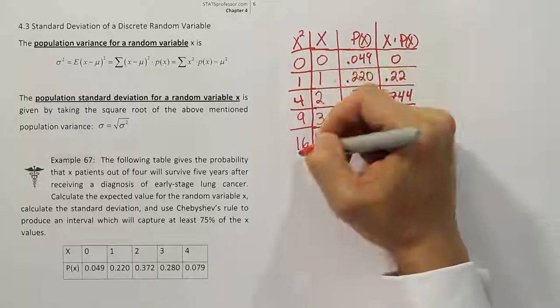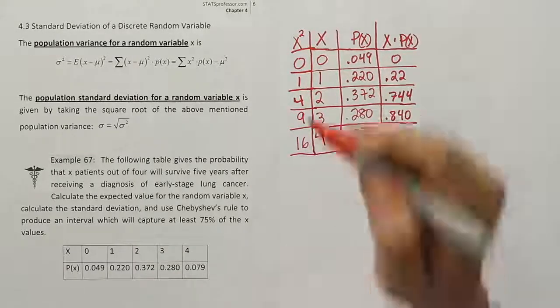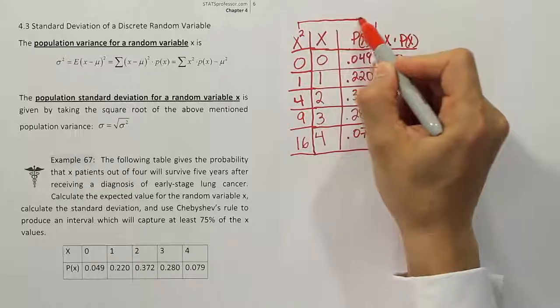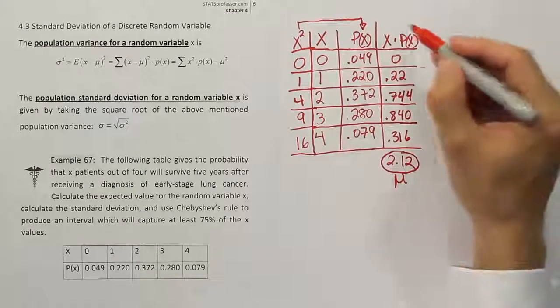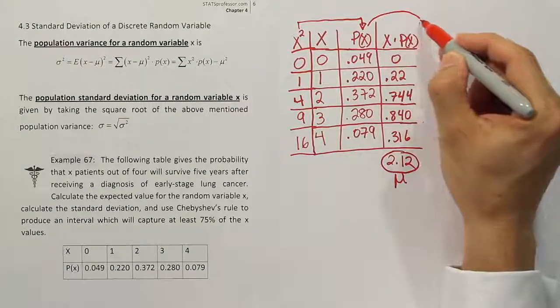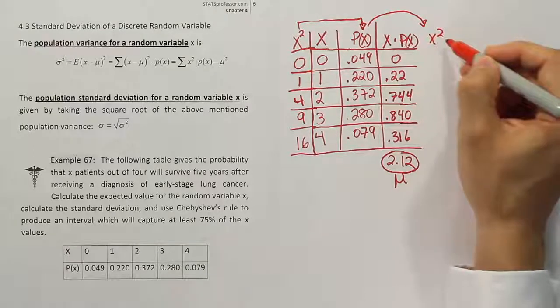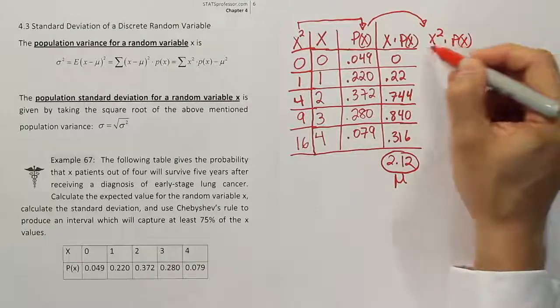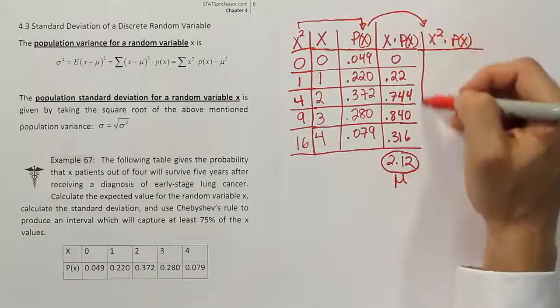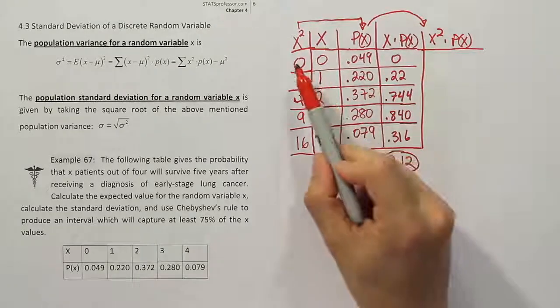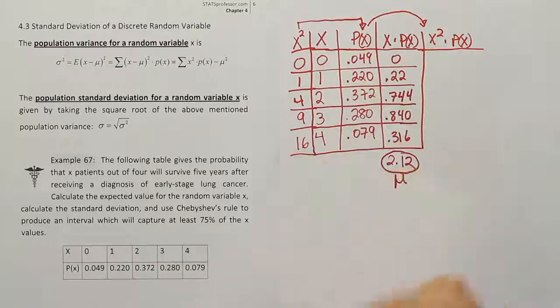So I've produced all the squares of my X values. Now what I want to do is take those X squared values and I want to multiply them times the P of X column so that I can then produce the X squared times P of X column. Alright, so I have an extra column here that we're going to create. So remember, it's X squared times P of X.